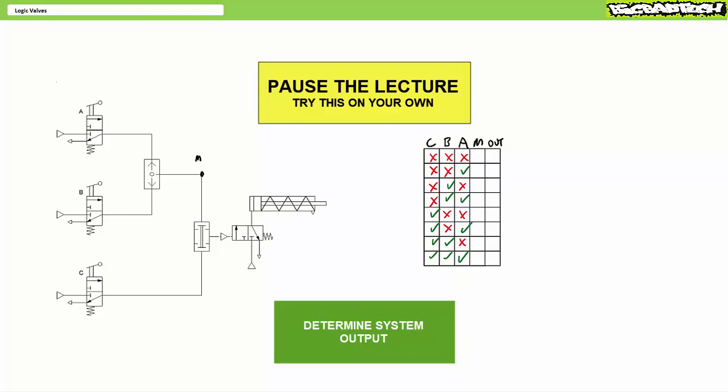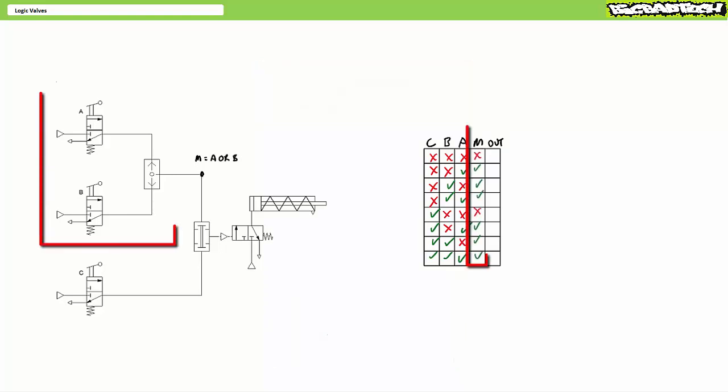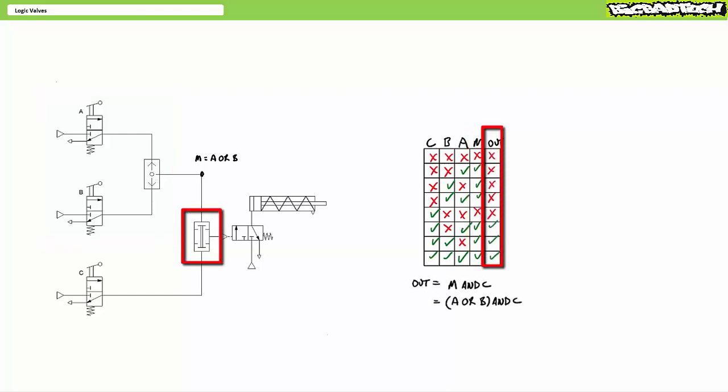If you're tracking, you should have obtained the following results. As one might expect, the OR valve produces an output M when signal is present at A or B. Intermediary signal M would look like this. The only way the AND gate produces output is when there is signal present at both M and C. Final output should look something like this. Ultimately, this system is performing the function A or B ANDed with C.